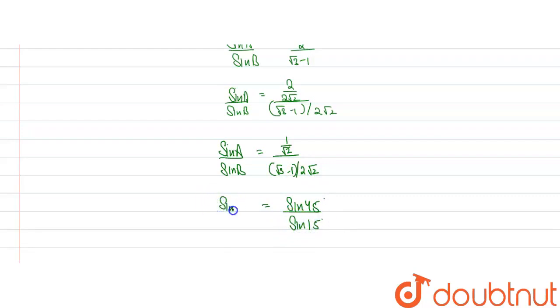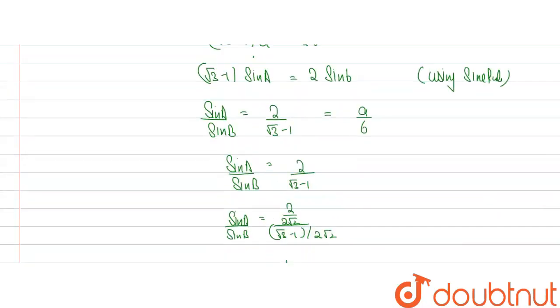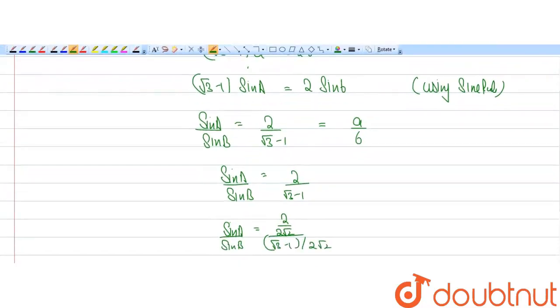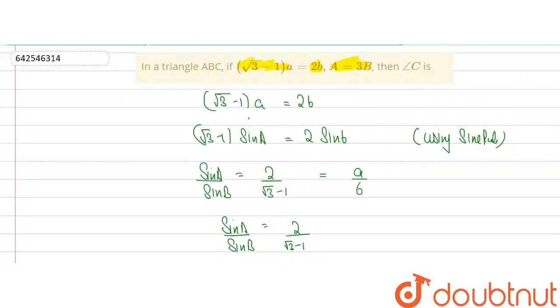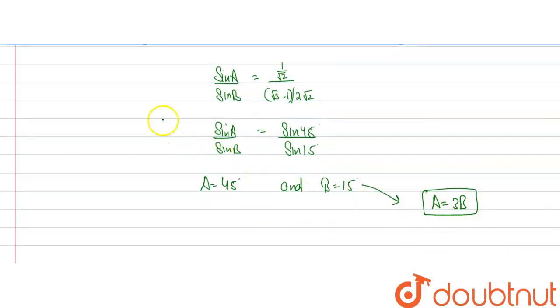This is equal to sin A by sin B, which will give us angle A is equal to 45 degree and angle B is equal to 15 degree. This condition was given to us, which is A is equal to 3B. So our values of A and B satisfy these equations also.